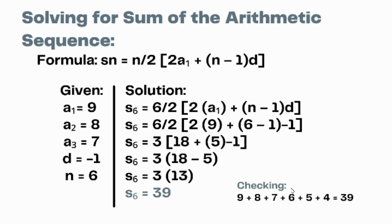For the last part, we solve for the sum of the arithmetic sequence. The formula is Sₙ = (n/2) × (2A₁ + (n − 1) × d). The given values are A₁ = 9, d = −1, and n = 6. Substituting and computing, we get S₆ = 39. Therefore, 39 is the sum of the arithmetic sequence 9, 8, 7, 6, 5, and 4.